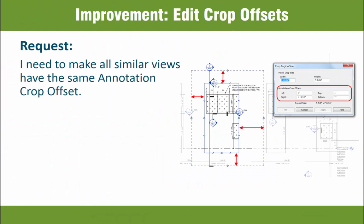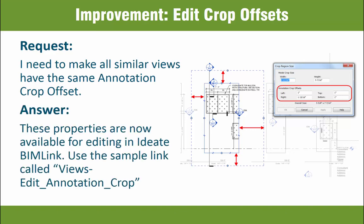Annotation crops are most typically used on dependent views as a way of hiding text and dimensions, but are also used on non-dependent views to crop and/or include section and elevation markers without call-out or other duplicate views. Because Revit does not permit the editing of more than one crop offset at once, this new enhancement can be a significant time-saver for larger projects.